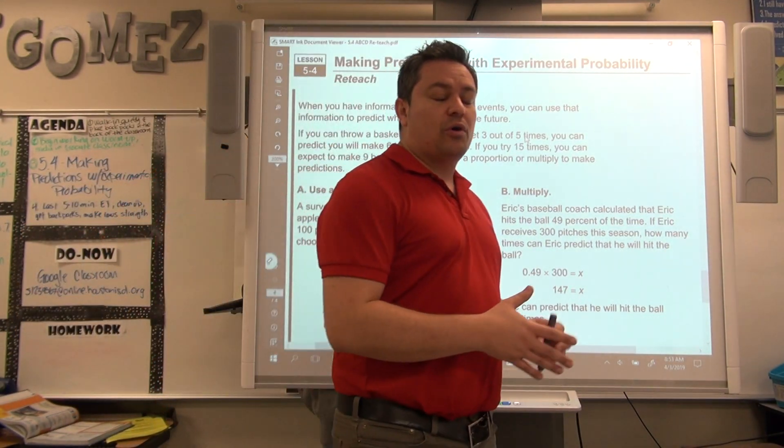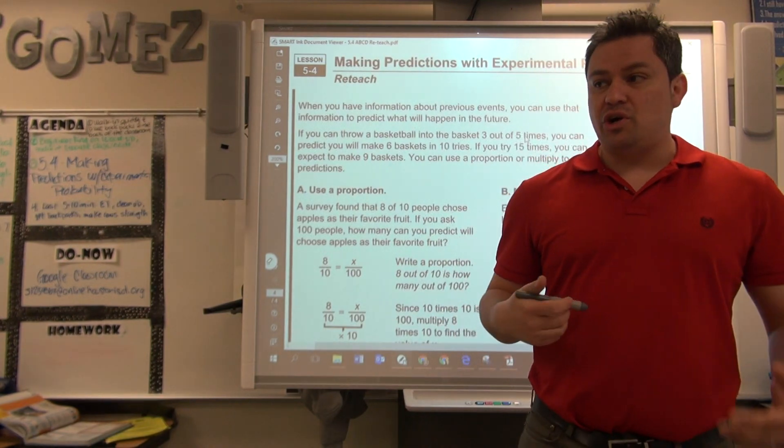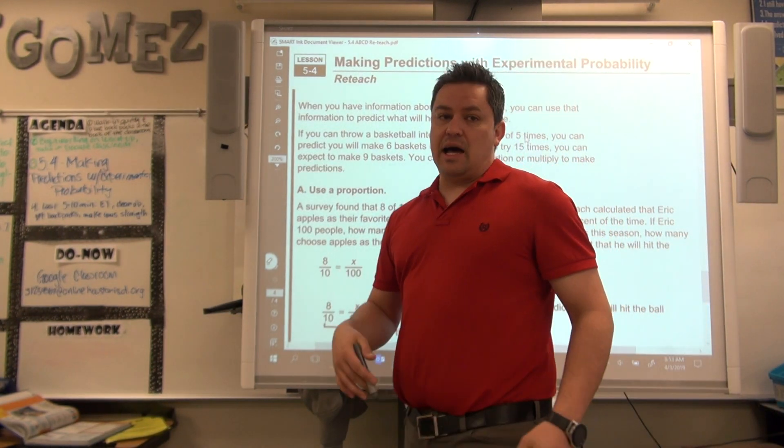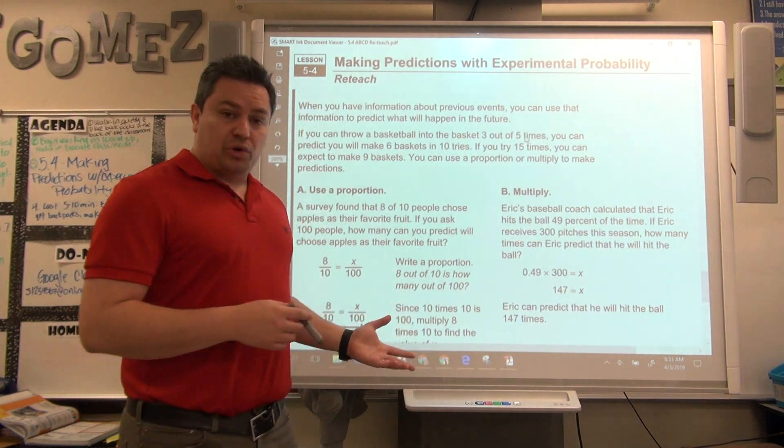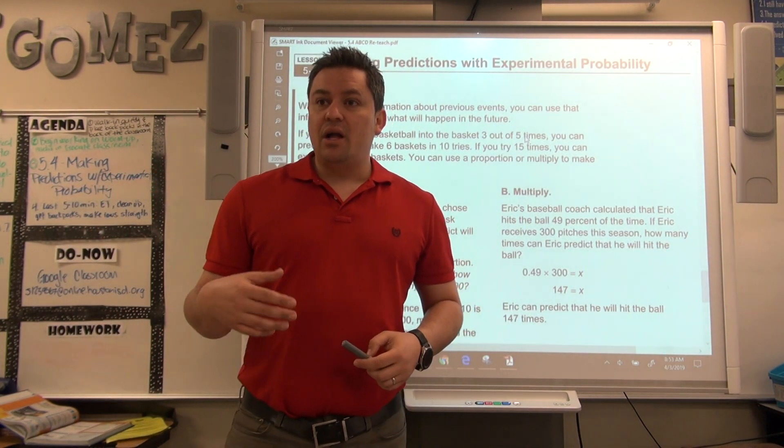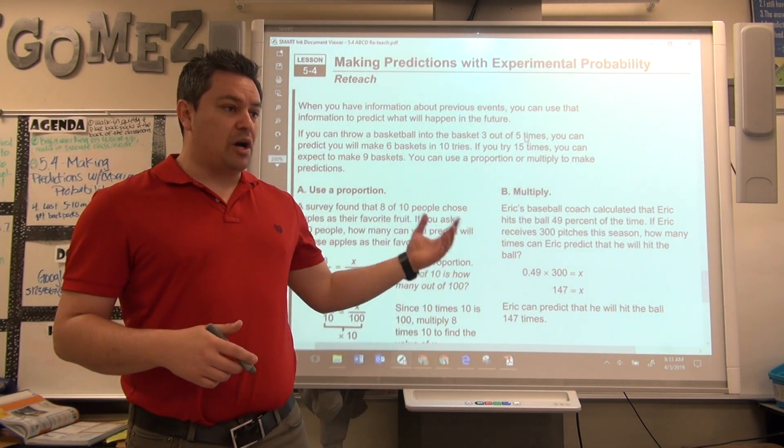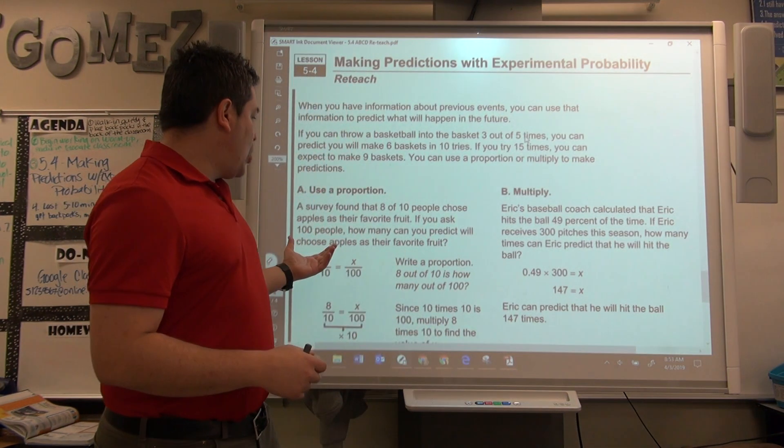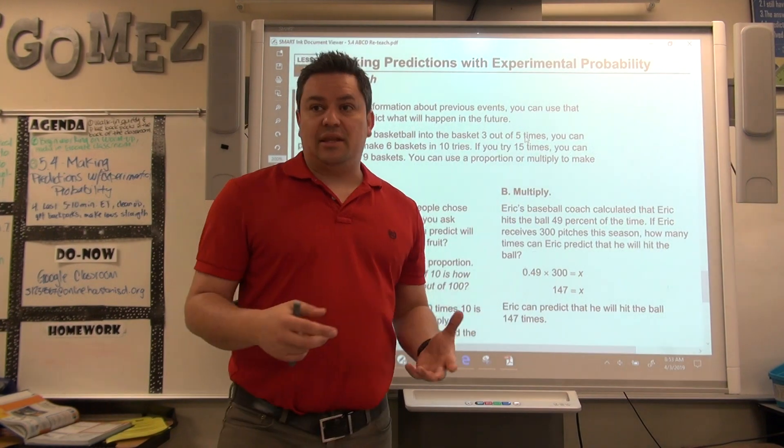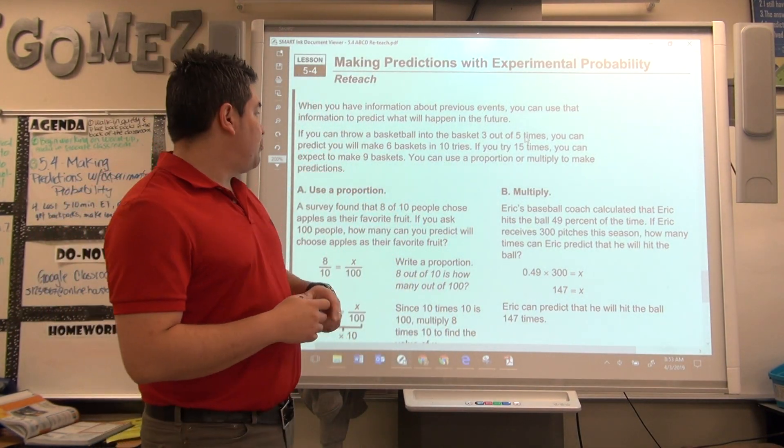Just like we did on the video before when we made predictions with theoretical probability, now we started doing the experiments. We're still going to be doing cross products like before. It's part over total and then whatever times they do it, you do the cross products and find it like that. However, we can use two methods and we're going to go about them.